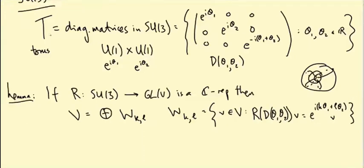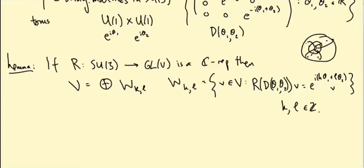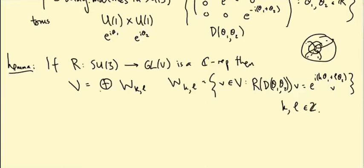For SU2, our torus was just a copy of U1 with only θ₁, and our diagonal matrix was just e^{iθ₁}, e^{-iθ₁}. We only needed one integer K to describe the weight space decomposition. Now we need two integers K and L. Rather than proving the lemma immediately, I'll work out some examples so you can see what the weight diagrams look like — instead of sequences of dots along a line, we'll now have two-dimensional diagrams in the plane.